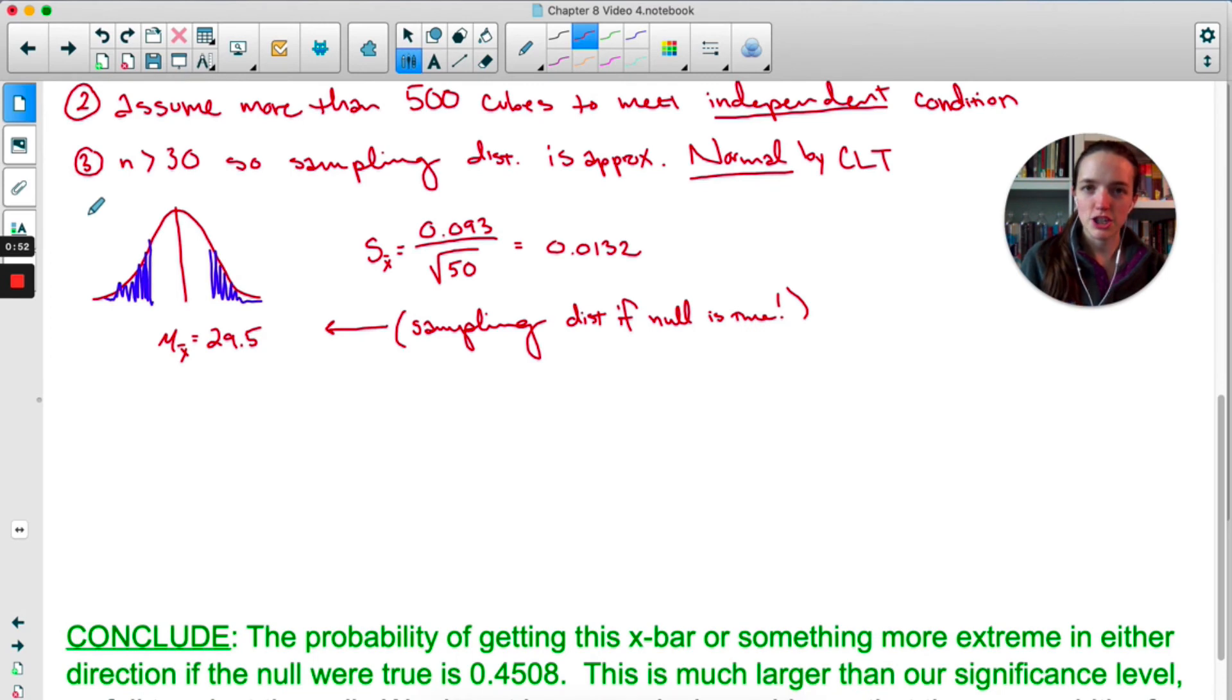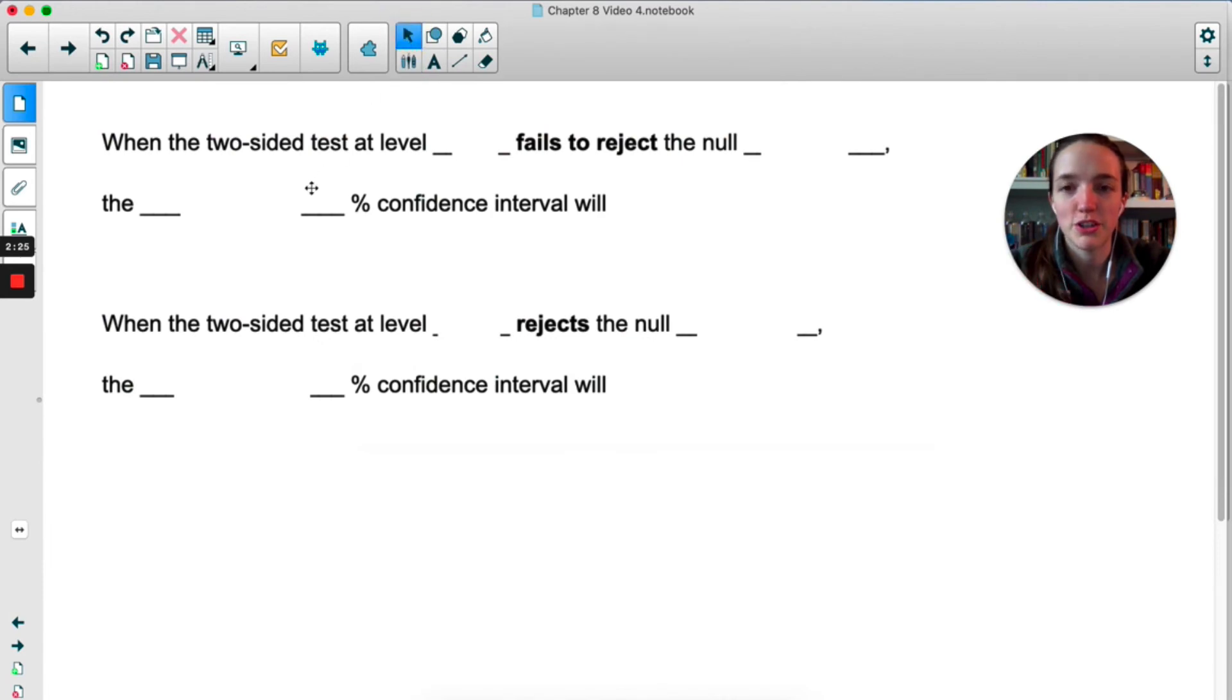There's actually an interesting relationship between a two-tailed test and a confidence interval, so I wanted to mention that really quickly instead of going over a whole other example because I feel like it's a little repetitive. So this is the relationship between a two-sided test and a confidence interval. When we do a two-sided test at level alpha, let's say, and we fail to reject the null, I'm just going to call it mu equals some number, then the 1 minus alpha confidence interval will contain that number.